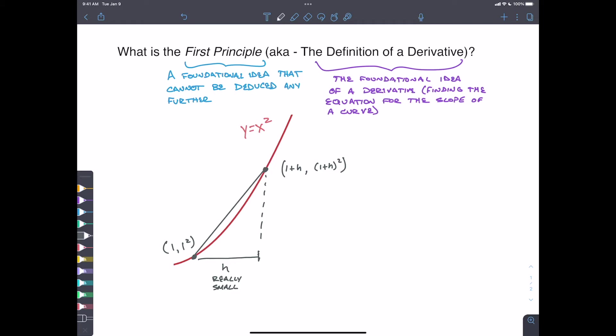So if we want to find the slope at this point, the slope is always y two, which is one plus h squared, minus y one, which is this thing down here, minus one.